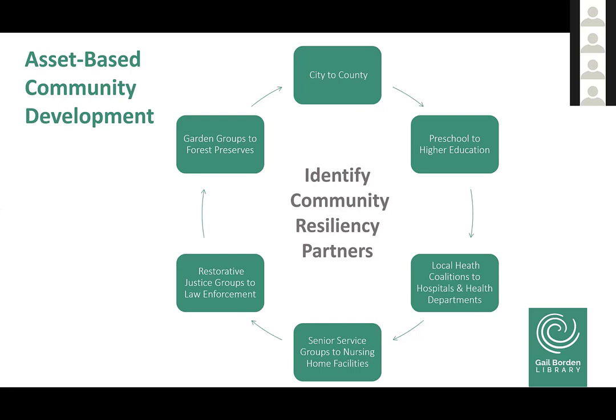We look across sectors: preschool to higher education, local health coalitions to hospitals and health departments, senior service groups to nursing home facilities, restorative justice groups to law enforcement — your sheriff's departments, your juvenile justice councils — gardens groups to forest preserves or recreational centers. We're mapping what your community has to offer. If you're a small community, look at your county. We often look at what other communities are doing outside the Chicago area and across the nation. Libraries do well sharing and learning, and that's part of the wonderful thing about our profession.